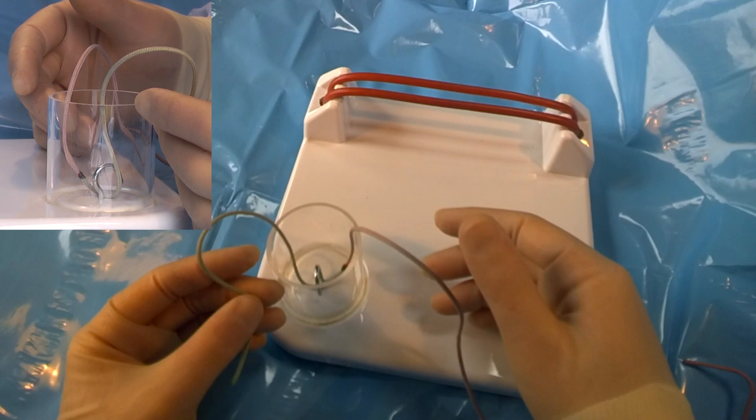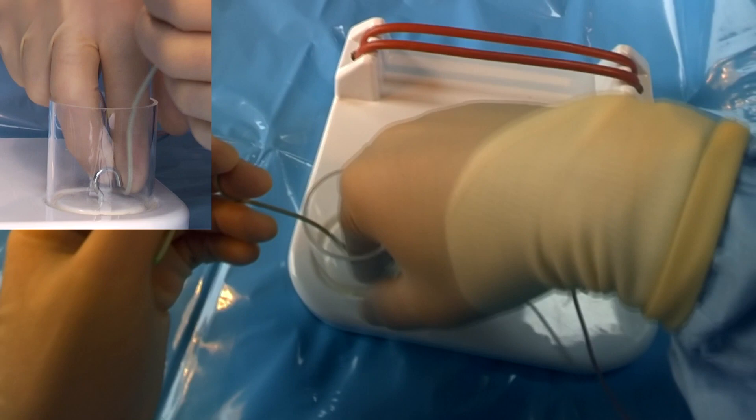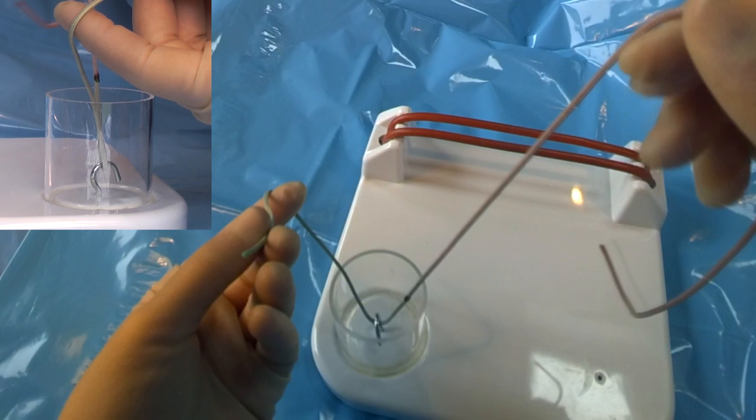In this video we're going to be demonstrating how to do a one-handed knot tie at depth. What we have is our thread here, which we're going to pop underneath to where we're going to tie.